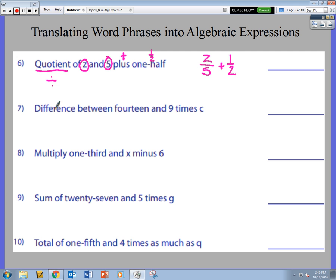Again, knowing some terminology. Difference. Number seven, difference between 14 and 9 times c. The difference between my age and your age, to figure that out, we would do subtraction. So here I'm subtracting. And what am I subtracting? Well, I'm subtracting 14.